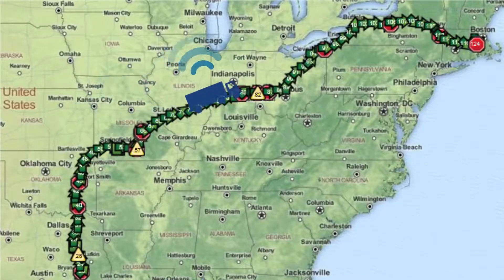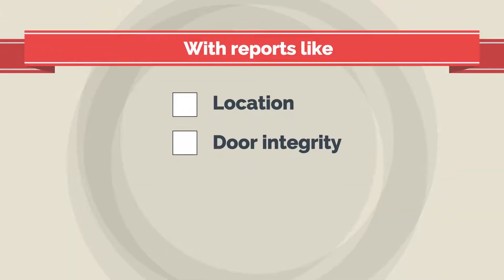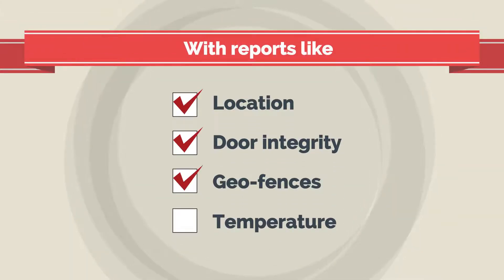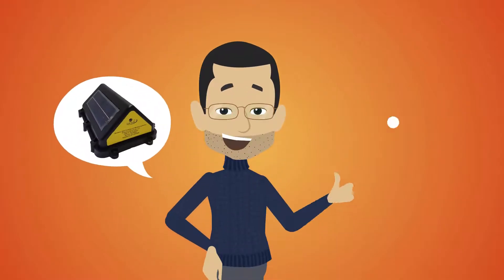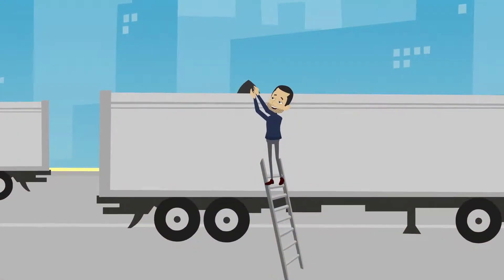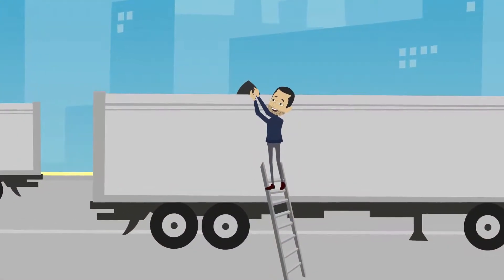Don can have all the benefits of a traditional GPS solution with reports like location, door integrity, geofences, and temperature at a fraction of the cost. Don also loves that LoRa can be in a non-permanent unit, solar-powered and magnetically mounted to easily swap between containers.